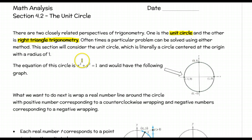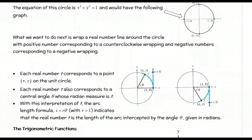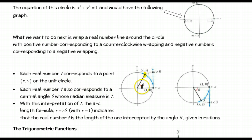The equation of the circle is x² + y² = 1. What we want to do next is take a real number line and wrap it around the circle. As you can see in these diagrams, here's the number line going straight up for values of t greater than 0. We take this and wrap it around the circle — if we pick some arbitrary point, we get an x and y coordinate. Each real number t corresponds to a central angle, and using the arc length formula s = rθ where r = 1, the real number t is the length of the arc intercepted by angle θ given in radians.